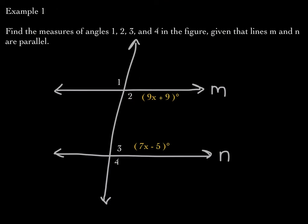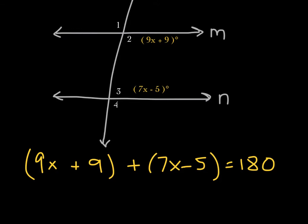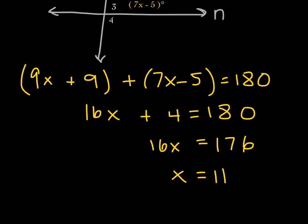Example one: Find the measures of angles one, two, three, and four, given that lines M and N are parallel. Angles two and three are interior angles on the same side of the transversal, so they are supplementary — they sum to 180 degrees. I'll set up the equation: 9x + 9 + 7x − 5 = 180. This leads to 16x + 4 = 180. Subtracting 4 from both sides gives 16x = 176. Dividing both sides by 16 gives x = 11.